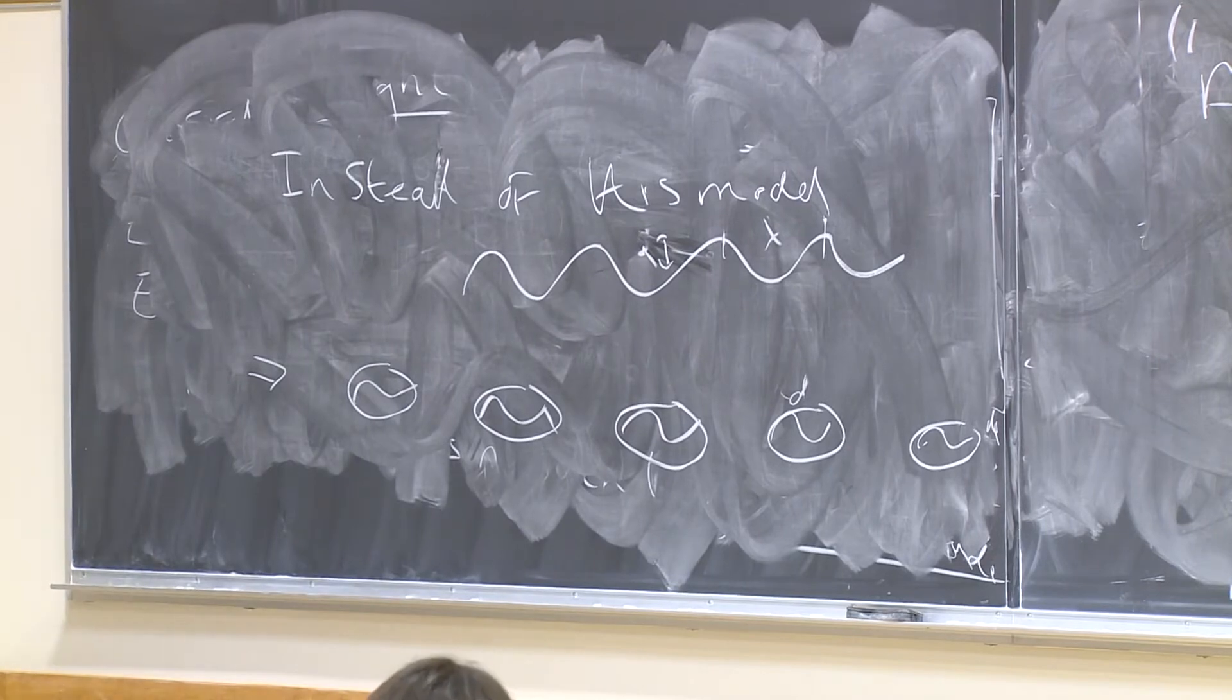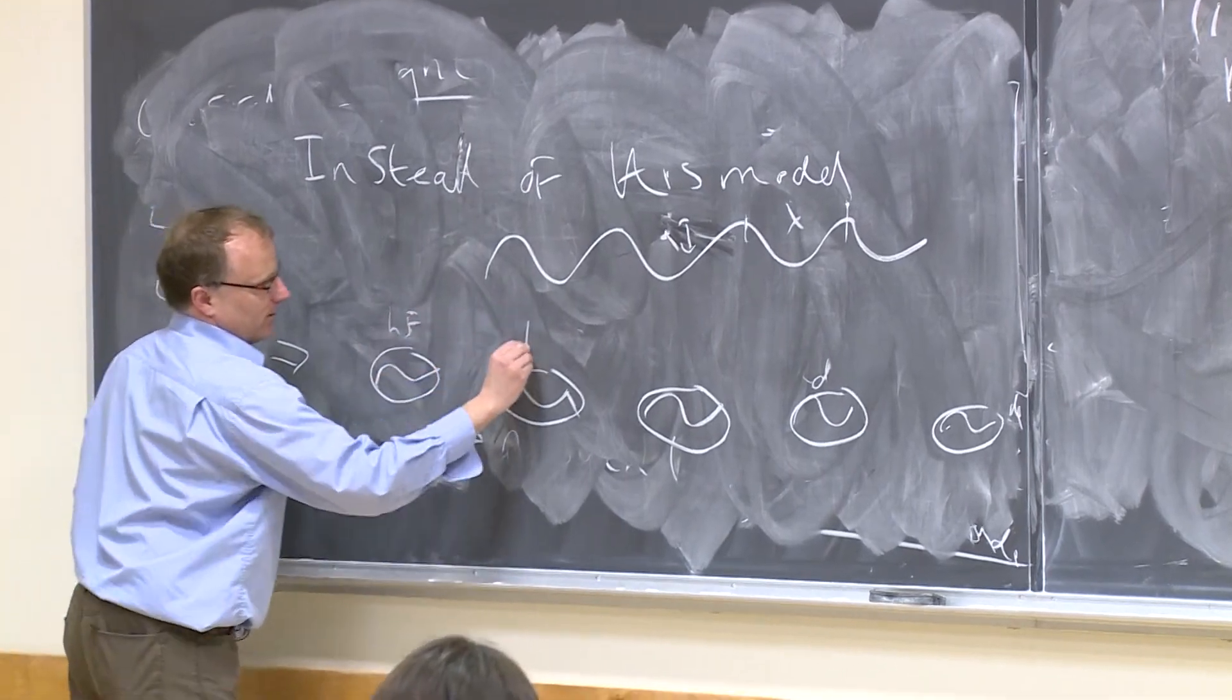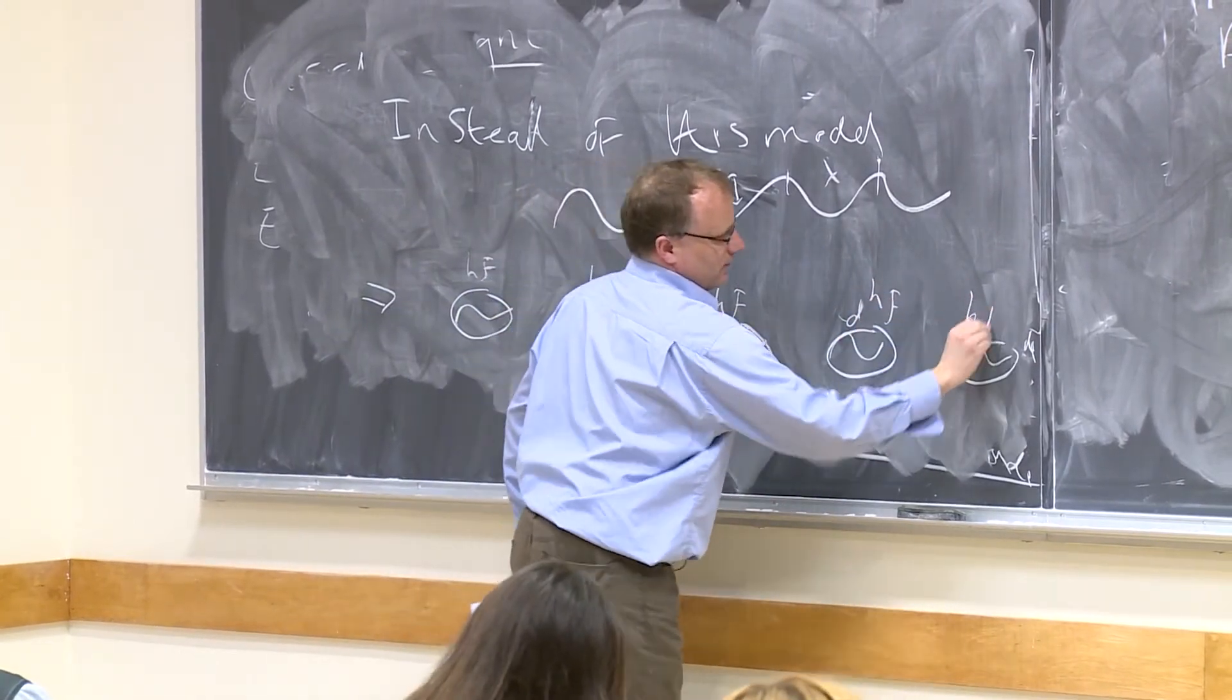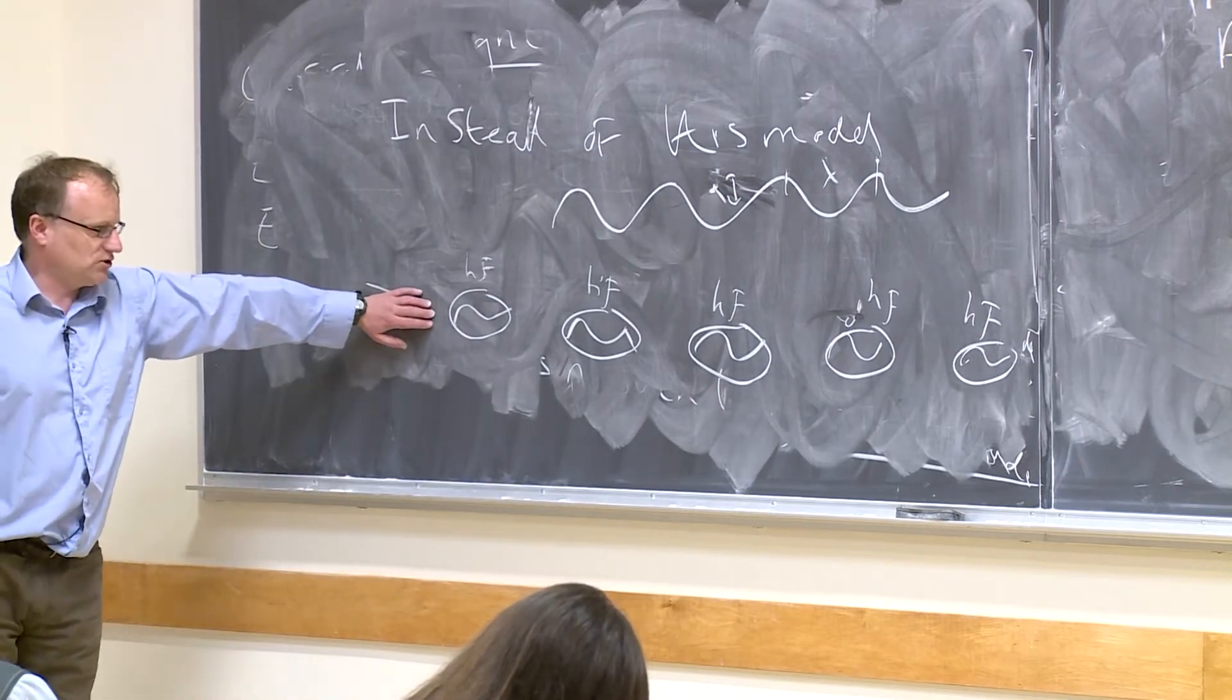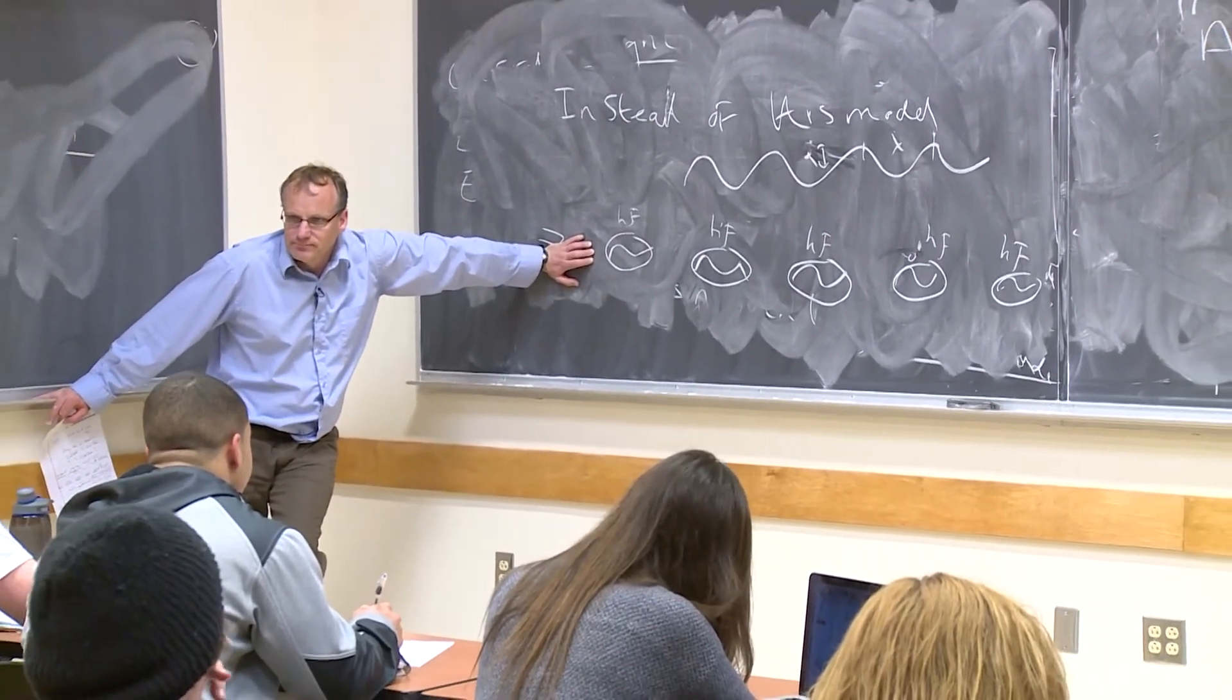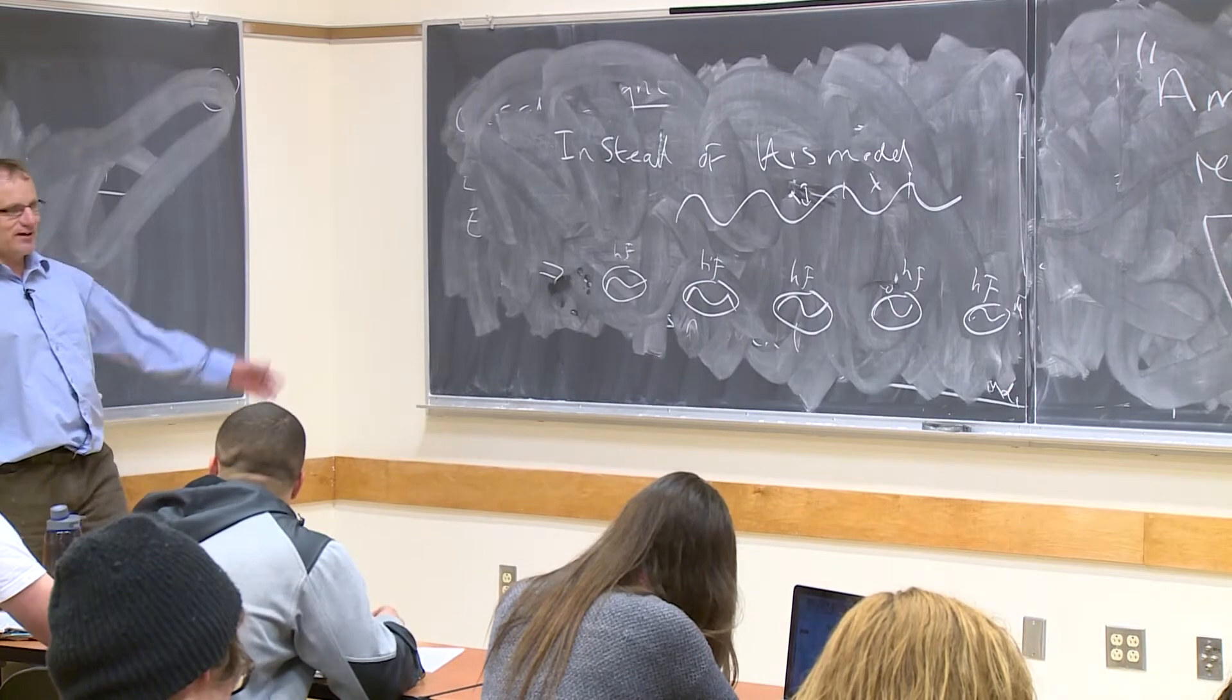It's a series of photons. So these are photons. Each one of these is an H F, where H is Planck's constant. So the energy of this, what's the energy of this light? H F times, well, I've got five of them, right? Five H F.